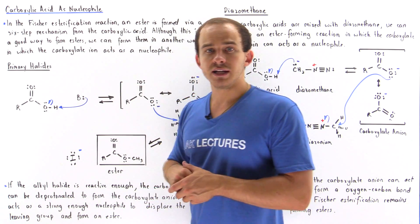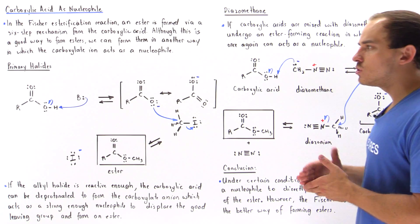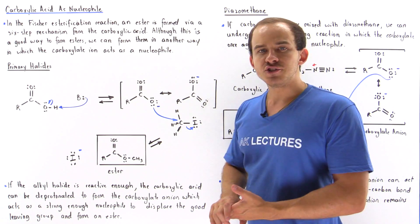And in these two mechanisms, the carboxylate ion that is formed in the first step basically acts as a nucleophile, as we'll see in just a moment.